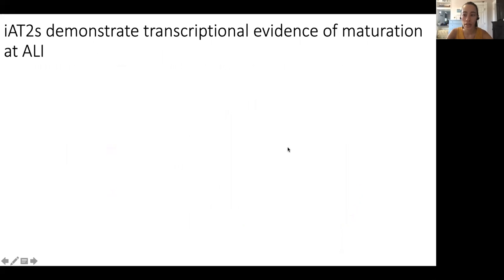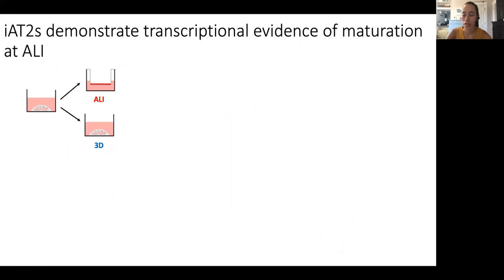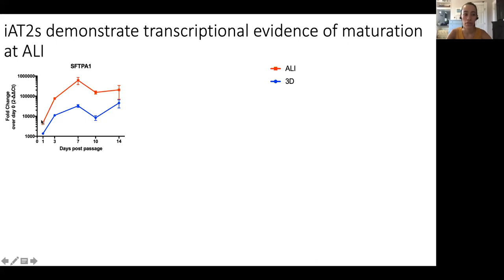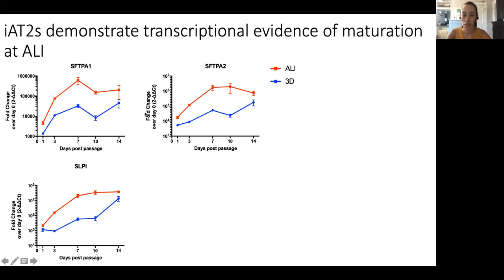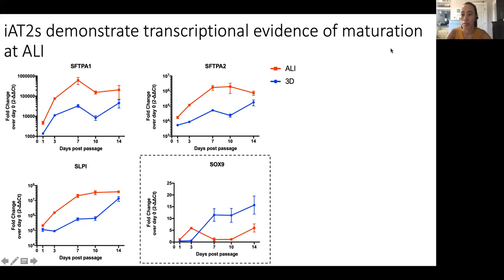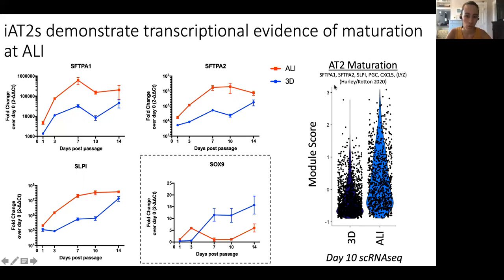What we do see is that these iPSC-derived type 2-like cells seem to mature at air-liquid interface compared to 3D. When we passage iAT2s cultured in 3D to either ALI or 3D and follow them over time, we see by qPCR an upregulation of surfactant protein A1 — shown in red for ALI and blue for 3D — as well as SPA2 and SFTPB. These three are markers of more mature type 2 cells. Importantly, they also downregulate SOX9, an important lung epithelial progenitor marker. This also bears out at the single-cell level as a composite module score including these genes and others of type 2 cell maturation, as defined by the Kotton lab — showing an increase in maturation score at air-liquid interface compared to 3D at day 10 post-passage.